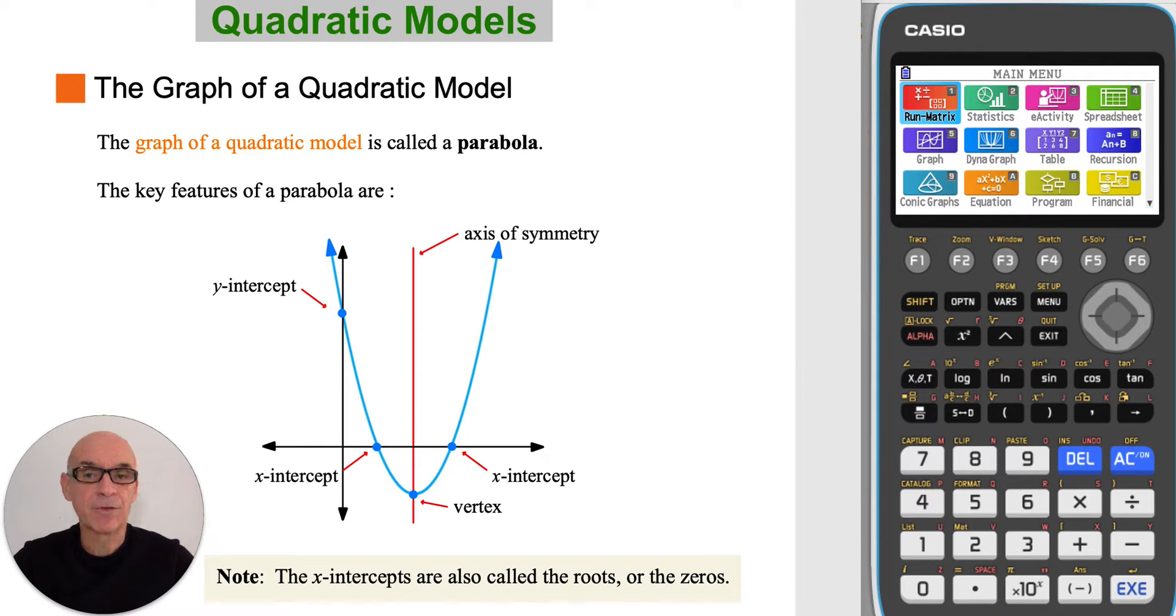The graph of a quadratic model is called a parabola. The key features of a parabola are its y-intercept, where the graph crosses the y-axis, its x-intercepts, where the graph crosses the x-axis, its vertex, which will either be a minimum or a maximum, and its axis of symmetry, and the graph is symmetrical on either side of this line.